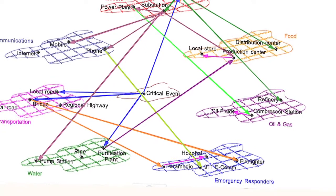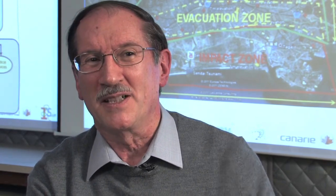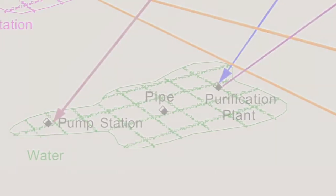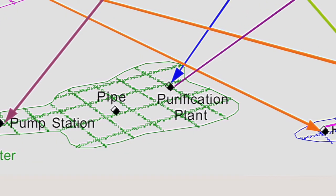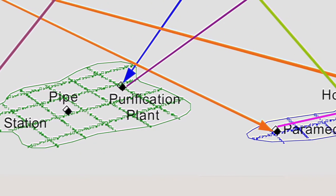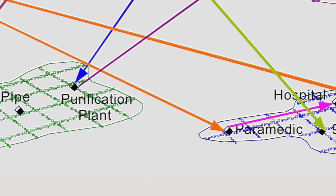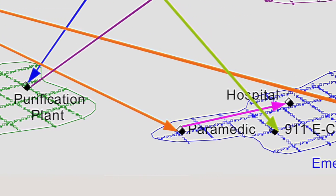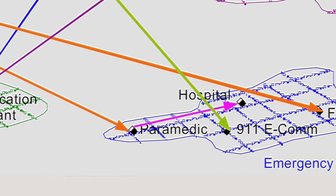An earthquake has happened. There is not enough energy for both the hospital and the water pumping station — how do you split it? If you give 100% to the hospital and zero to the water pumping station, then the hospital will not be able to operate — not because of lack of electricity, but lack of water. So there is a best ratio, a best combination of resources allocated to your operational units.